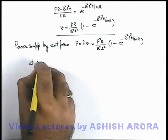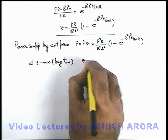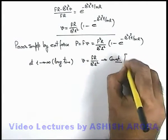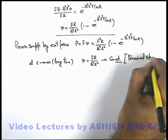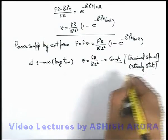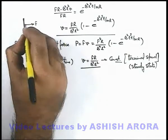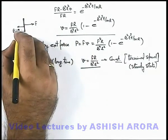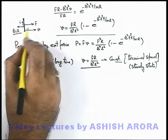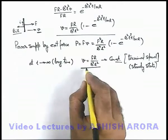At t approaching infinity, that is after a long time, the speed will approach the constant value FR over B²L². This constant speed is called terminal speed, and this state is called steady state. This occurs because as speed increases, the magnetic force BIL on the rod acting leftward increases. Once BIL becomes equal to F, the acceleration of the conductor becomes zero and the rod approaches a constant terminal speed.